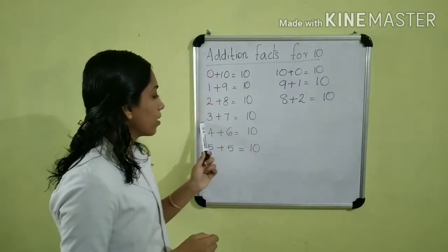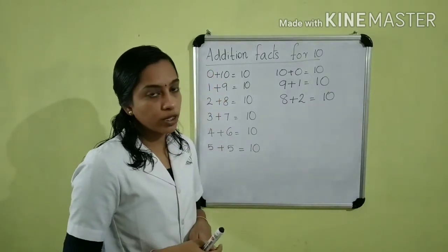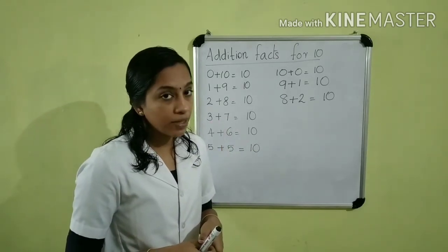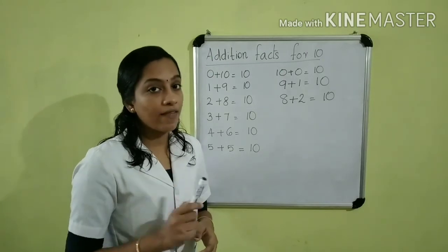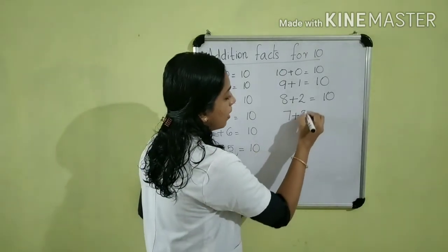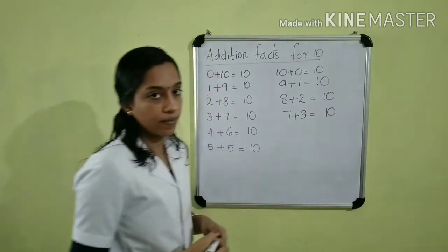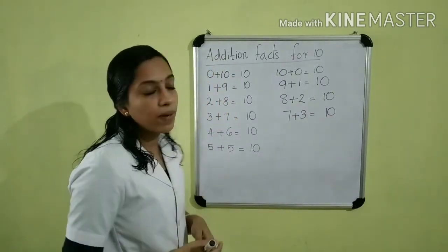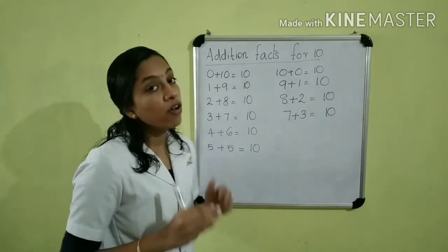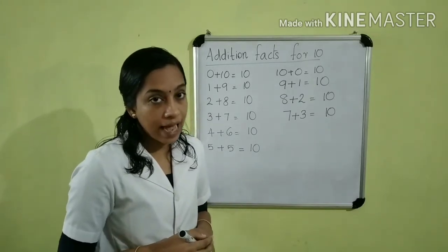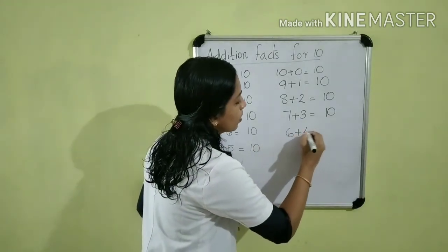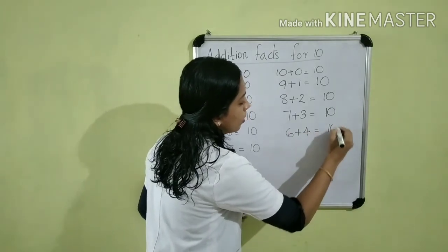Next, 3 plus 7 is equal to 10. How do you change the order of 3 and 7? That is, 7 plus 3. So we can write, 7 plus 3 is equal to 10. Then, 4 plus 6 is equal to 10. We can change the order of 4 plus 6 to 6 plus 4. That is, 6 plus 4 is equal to 10.